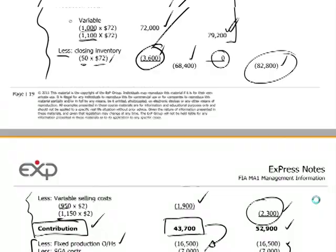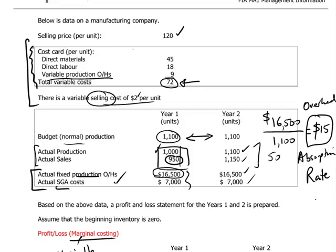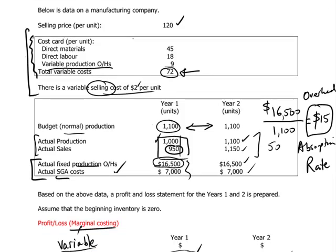Going back to the scenario outlined at the beginning: a manufacturing company with a budgeted normal production level of 1,100 units, actual production in year one of 1,000 units, and actual sales of 950 units. We've already worked out the profit and loss for marginal costing, and now we're applying exactly the same story using the absorption costing method.